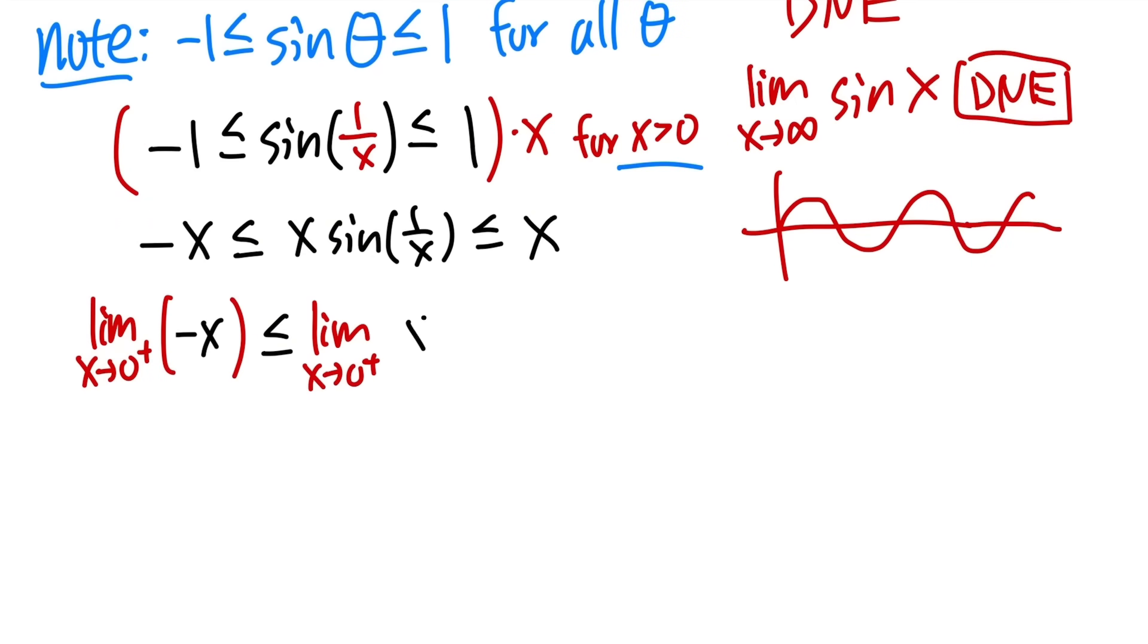this right here will be less than or equal to the limit as x approaching 0 plus, and we have x sine of 1 over x, and then, of course, one more, less than or equal to, and then we have the limit as x approaching 0 plus, and here we have x.